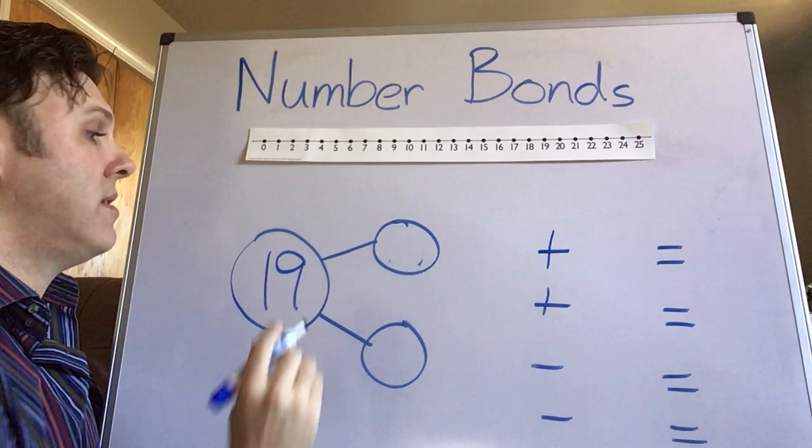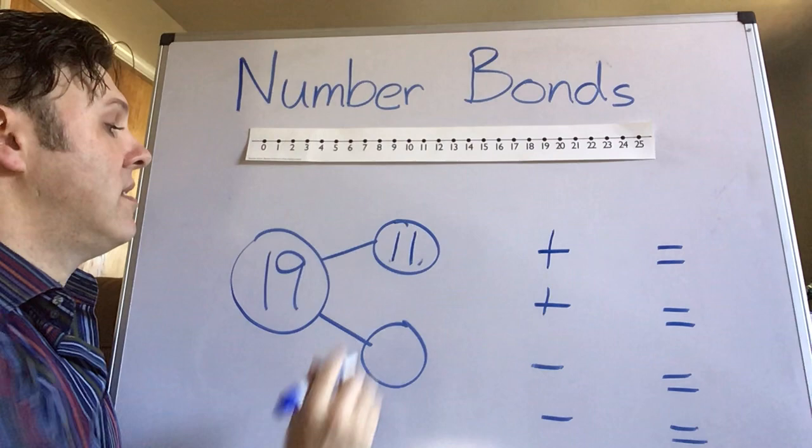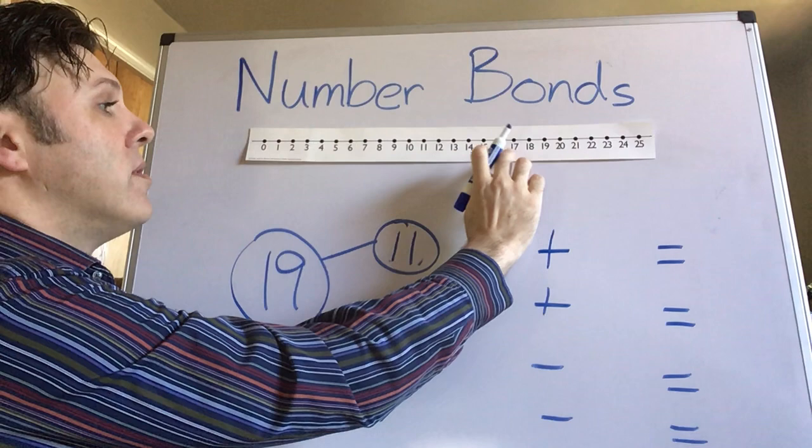I'm gonna go with nineteen. Much bigger number. And I'm gonna choose the number eleven here. So, if I go to nineteen and I go back eleven.